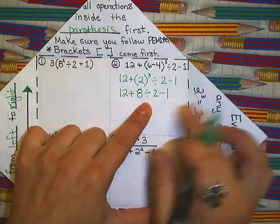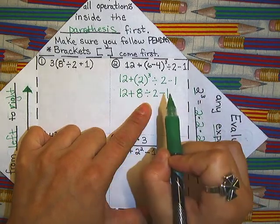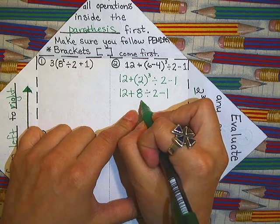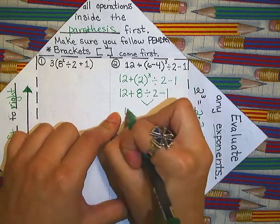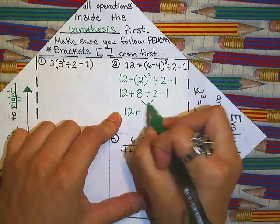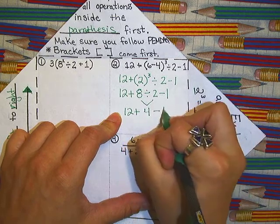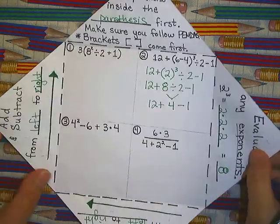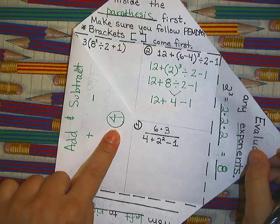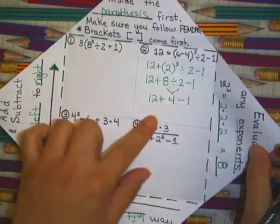So let's go to step three. Multiply and divide. I do see some division here. Now if I had both in here, I would just do whatever comes first left to right. But I just have division. So twelve plus, this becomes four minus one.